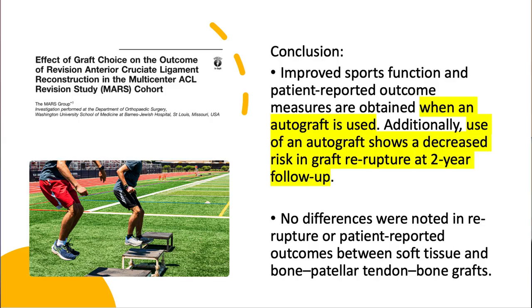We'd be remiss if we didn't talk about revisions, because revisions are a big part of any high-volume ACL practice. Regarding the MARS paper, they looked specifically at revisions using BTB autograft versus allograft and found a higher rate of failure with allograft use, but the median age in that study was 26. So if someone's under the age of 35, they have a higher rate of failure with allograft — and that doesn't change just because it's a revision. It's tempting to say, 'This is a revision — you've already had your autograft, here's your allograft,' but people are having ACLs at younger and younger ages. 13- and 14-year-olds are having primary ACL reconstructions; if they're having a revision in their late teens or early twenties, they should still get autograft tissue.